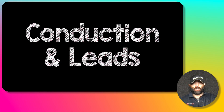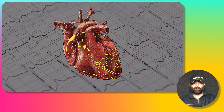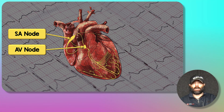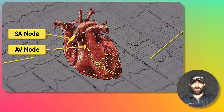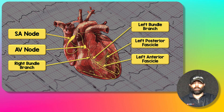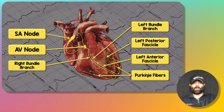Before we get started, it's important to understand the typical conduction system of the heart and where the leads sit in relation to this conduction system. Conduction typically starts down the sinoatrial node to the atrioventricular node, then down the right and left bundles. The left bundle also has a posterior and anterior fascicle, and then ultimately back up the Purkinje fibers.